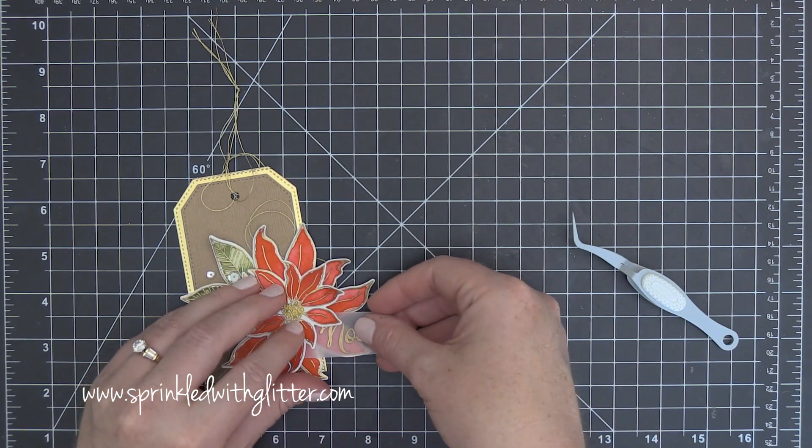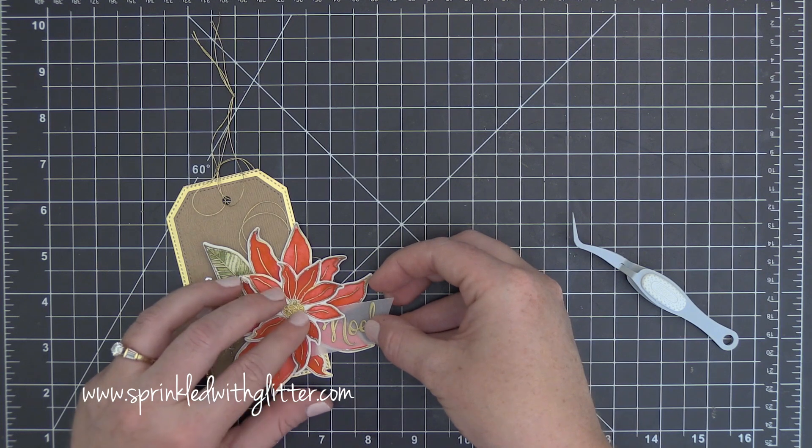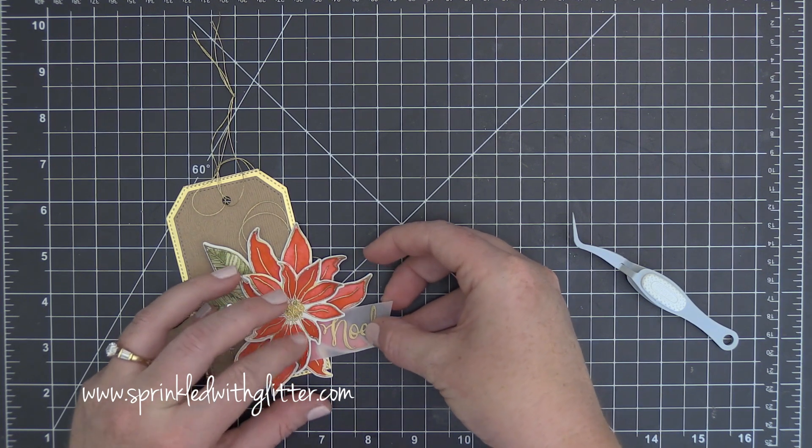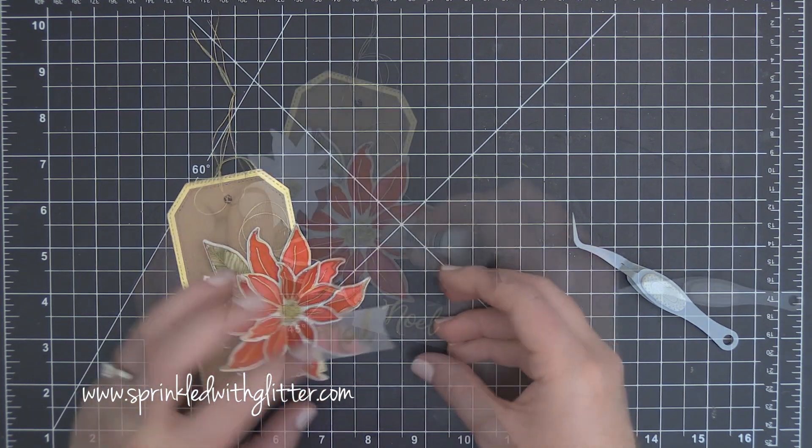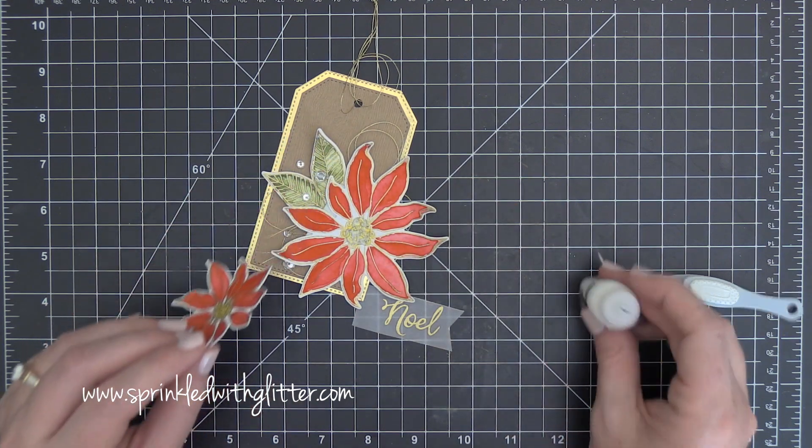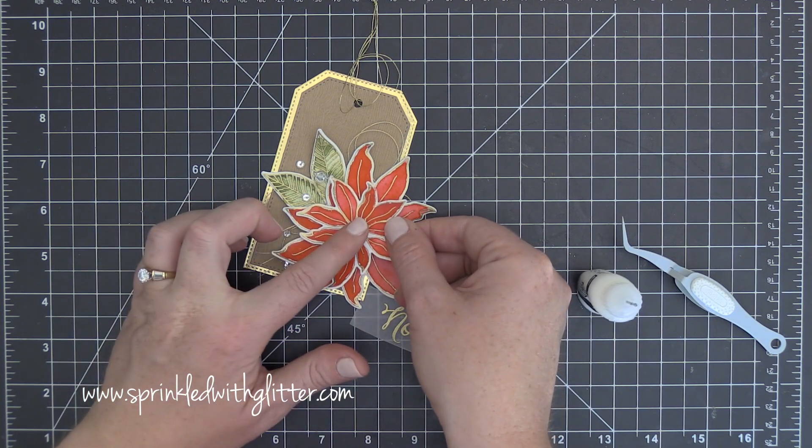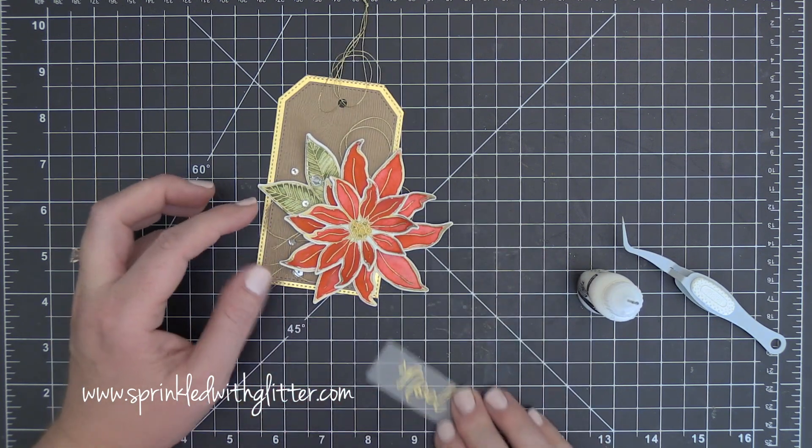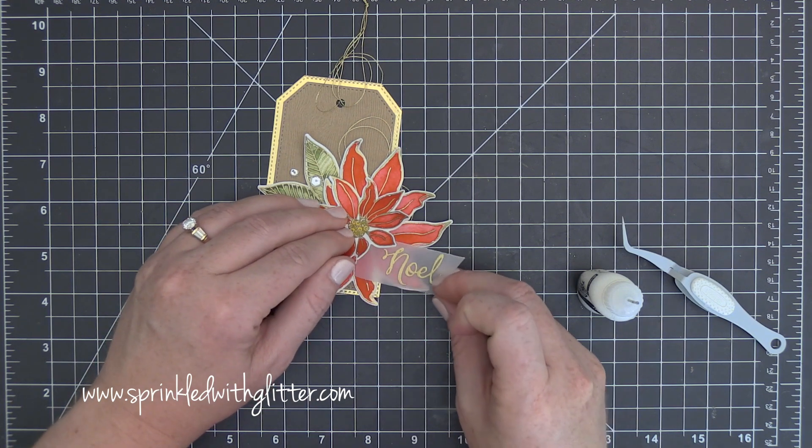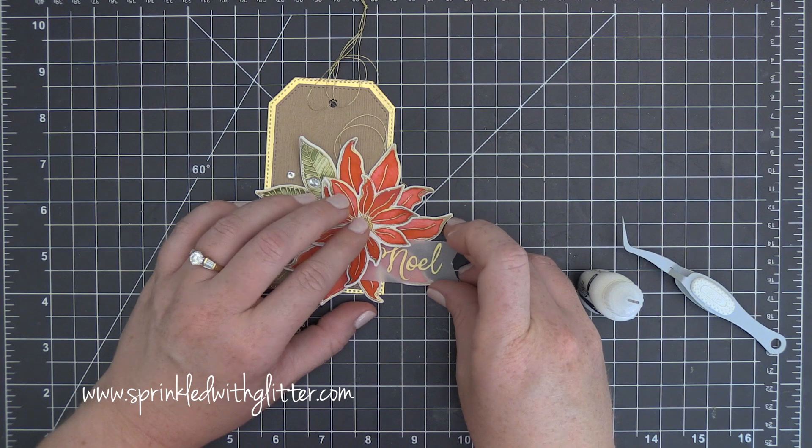Now I'm going to kind of lift this up and I realized as I was lifting and manipulating this that I really didn't have a good bond between those two layers. So I just picked up that smaller flower once again, I added a little bit more of the multi-medium and the matte finish behind it and I adhered that back on. I'm just going to tuck that sentiment piece up underneath that and allow that multi-medium to keep that in place as well.